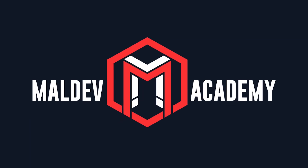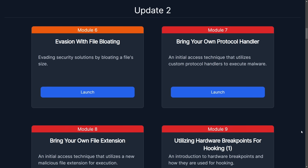Huge thanks to Maldev Academy for sponsoring this video. They cover this trick and even have a similar module on creating your own protocol handler. For this trick specifically — creating your own file extension — we might be able to take this a couple steps further. We've already made this more flexible with a simple reg add command, which we could obfuscate or make more stealthy, but we could actually get this code to run with a single click.